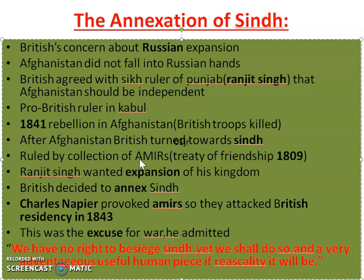The British decided to turn on Sindh. This territory was ruled by a collection of Amirs who had signed a treaty of friendship with Britain in 1809. However, the British wanted to regain their prestige and also ensure that Sindh could not be a target for Sikh expansion. For that purpose, Charles Napier, the British general, provoked the Amirs of Sindh so much that they attacked the British residency in 1843, which was basically an excuse for war.